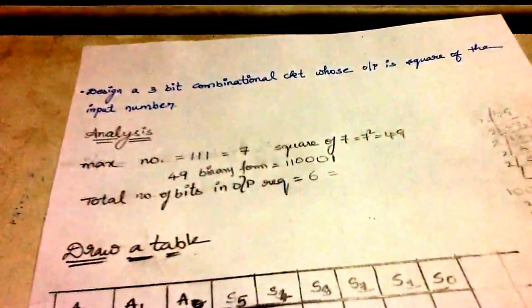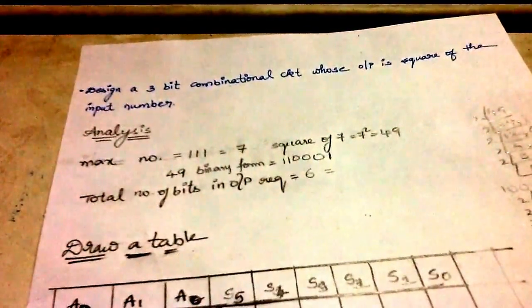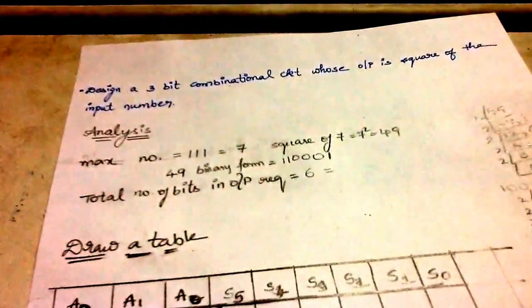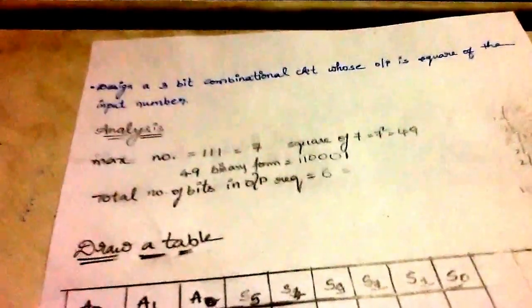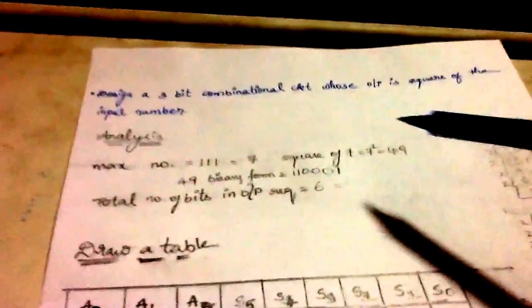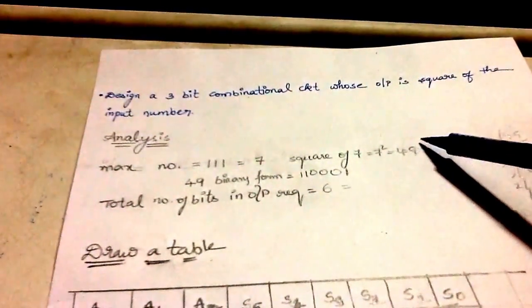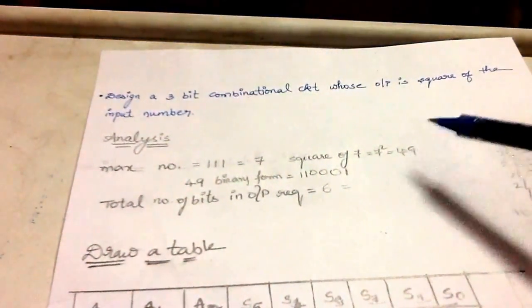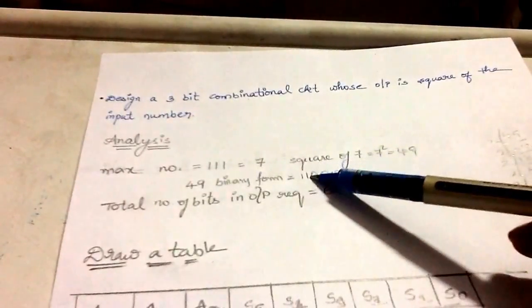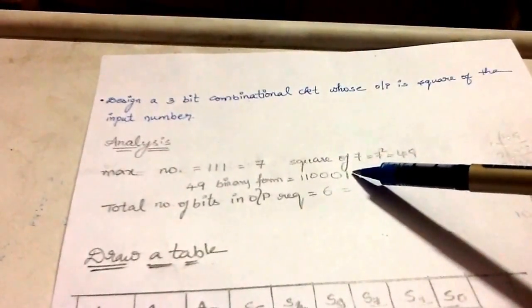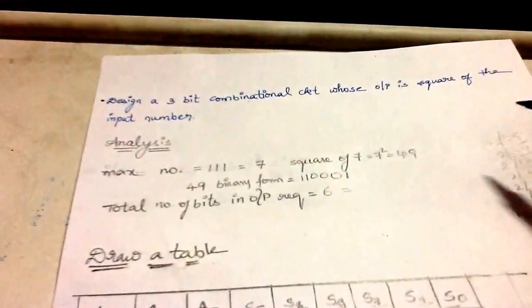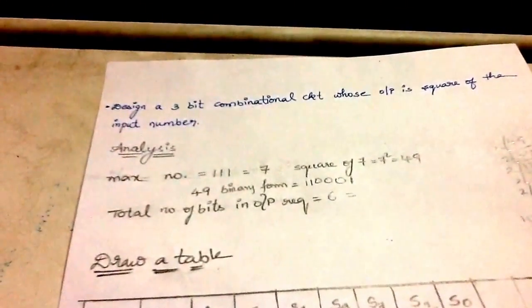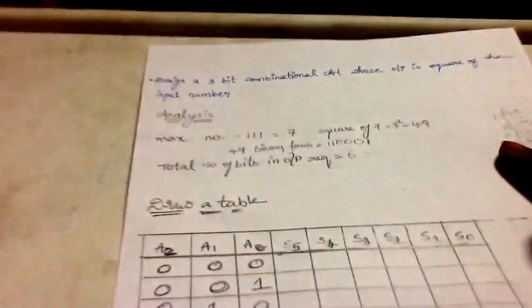Let us see how to analyze this problem. What is the maximum 3-bit number? It is triple 1 in binary and 7 when converted to decimal form. What is the square of 7 in decimal? 7 squared is 49. 49 in binary form is 110001. So what is the total number of bits required? 6, which is 2 power 5 is 32 and 2 power 6 is 64. We require 6 bits and now draw a table like this.